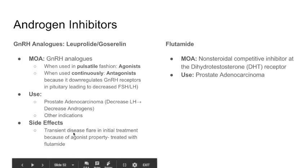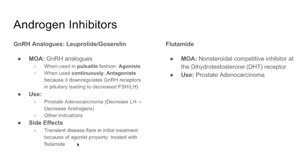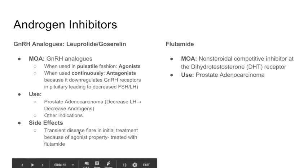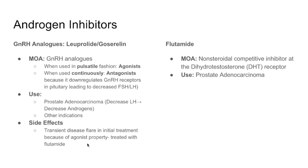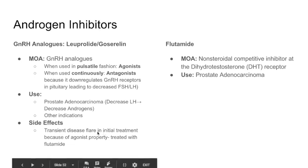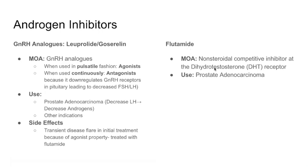A side effect is a transient disease flare at the start of treatment: initially the body interprets the drug as an agonist, producing luteinizing hormone which produces some androgen, causing a flare. Eventually, receptors are down-regulated, LH and androgen decrease. This transient flare is treated with flutamide. Flutamide is a non-steroidal competitive inhibitor at the DHT receptor — androgen converts to DHT, which tries to bind its receptor, but flutamide blocks it. It is used for prostate adenocarcinoma.